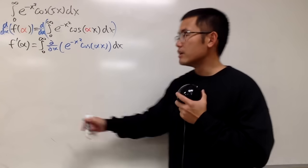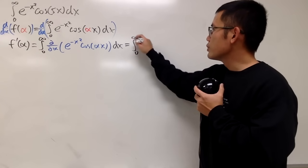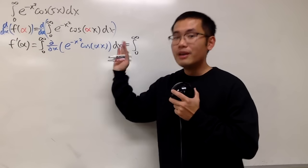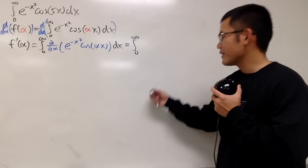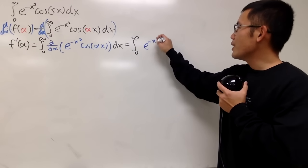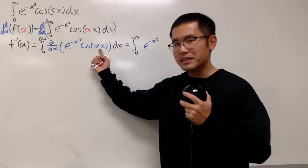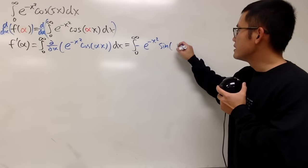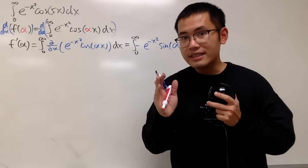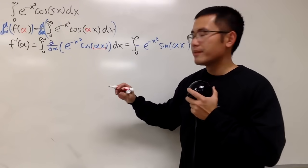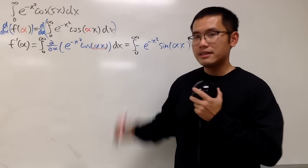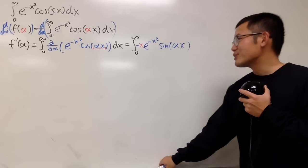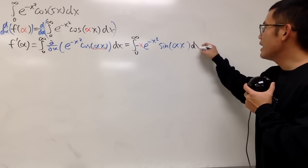Now we are going to work this inside out. Integral from zero to infinity — in the alpha world, x is a constant, so we write e to the negative x squared first. Alpha is inside of cosine, so we differentiate cosine, which gives us negative sine with the input the same. Then by the chain rule, we multiply by the derivative of the inside with respect to alpha — alpha is the variable, x is the constant — so we multiply by x. And of course we still have dx on the outside.